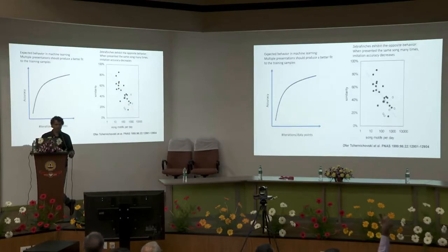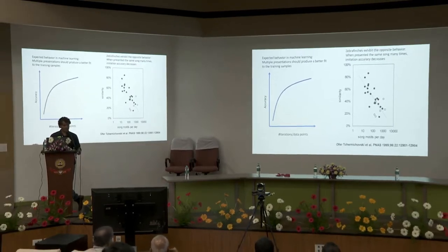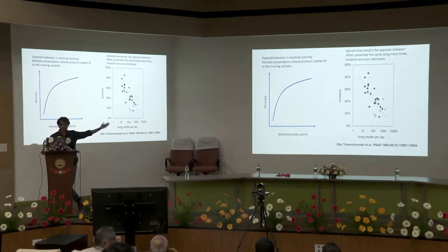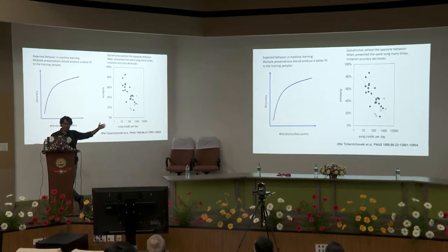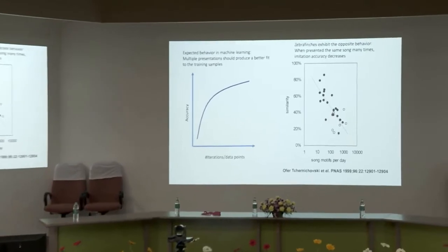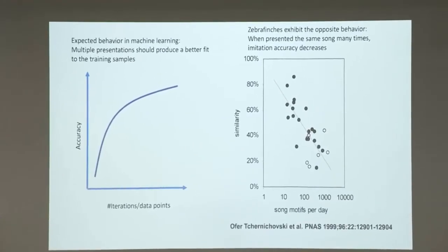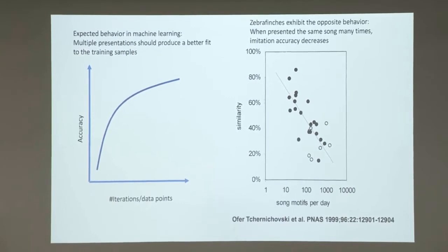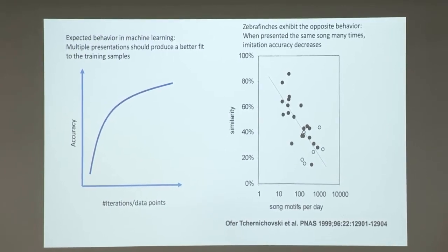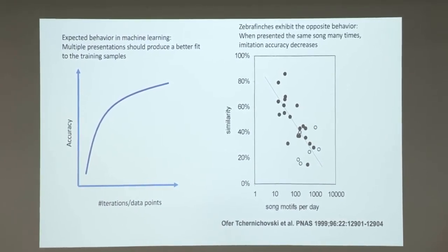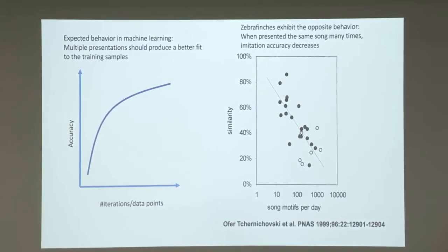There's an interesting dichotomy between song learning in birds and machine learning. In machine learning, if you keep presenting the same example many times, your accuracy improves. But birds behave in exactly the opposite way — if you keep presenting the same song many times, their performance actually degrades. The reason may be that they're getting bored or rebellious. You yourself would not want to be presented the same material so many times. This is almost diametrically opposite behavior between machine learning and biological learning.